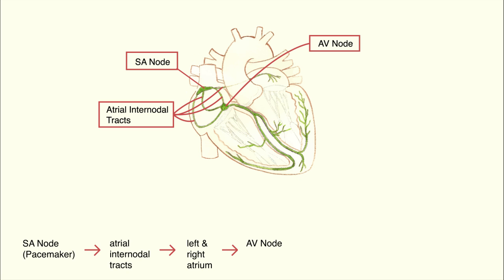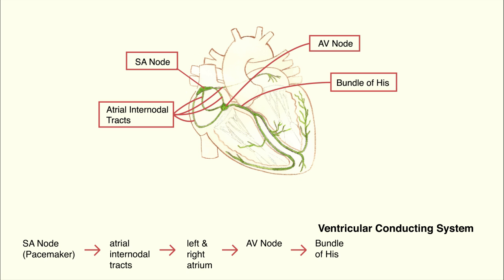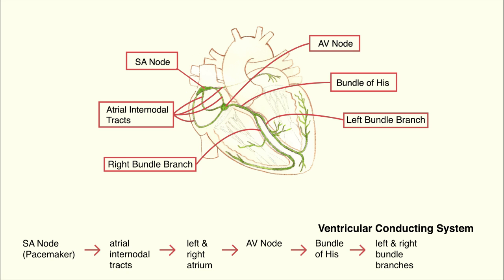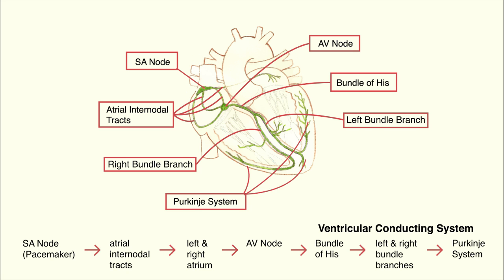From the AV node, the action potentials enter the specialized conducting system of the ventricles. The action potentials first go through the bundle of His. From the bundle of His, they go down to the left and right bundle branches and then to smaller bundles of the Purkinje system. Conduction through the His-Purkinje system is extremely fast, and it is this rapid conduction of action potentials through the ventricles that is essential and allows for efficient contraction and ejection of blood.